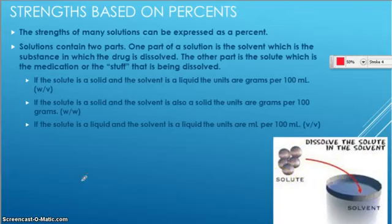We've got three basic types. We've got the type where we put a solid and a liquid, and that's called weight volume. We have this type where we have a solid and a solid, and that's called weight weight. And we have volume volume which is a liquid and a liquid.